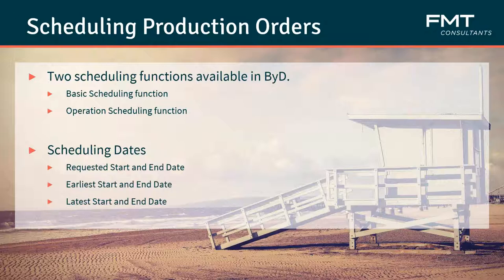Another part of production is the scheduling. There are two scheduling functions available in By Design: your basic scheduling function and your operational scheduling function. The basic scheduling function is provided for the whole production order. Immediately after a production order has been created, it is scheduled automatically using dates from planning. You can also manually trigger basic scheduling by specifying the earliest start and end dates in the production order. The operational scheduling function lets you schedule a single operation before releasing the production order — useful for when you have bottlenecks in your resources.